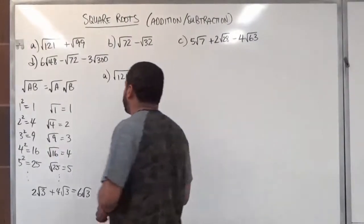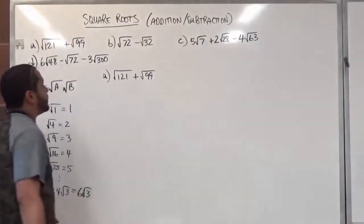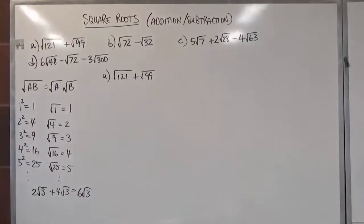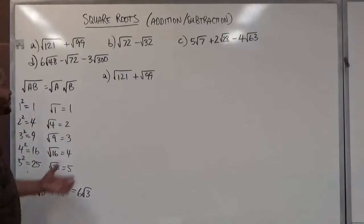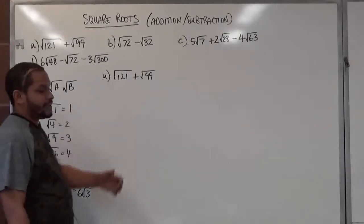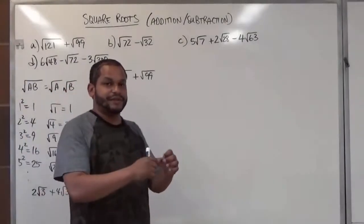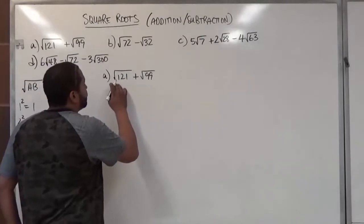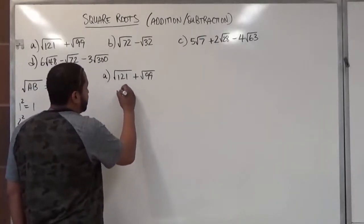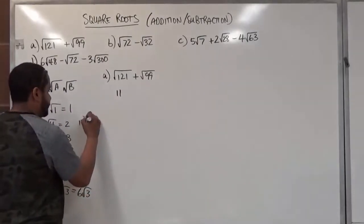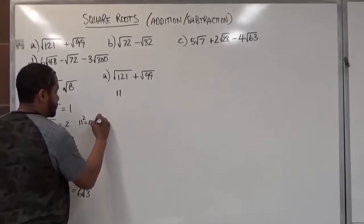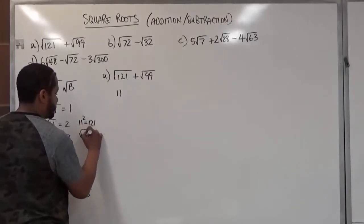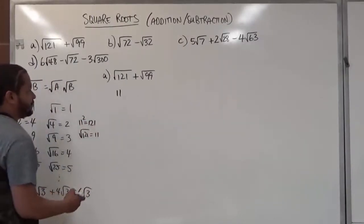So when we're breaking these down, we're looking for any perfect-square factors of the numbers. In Part A we have the square root of 121 plus the square root of 99. If you go far enough down the list, you'll find that 121 is the product of 11 times 11, so the square root of 121 is just 11, because 11 squared is 121.